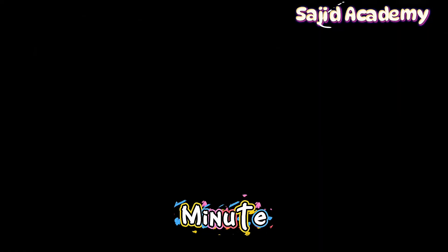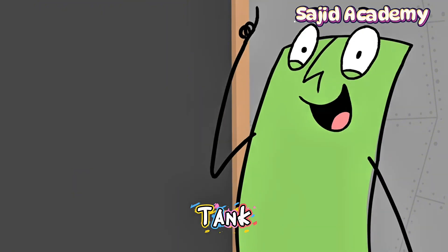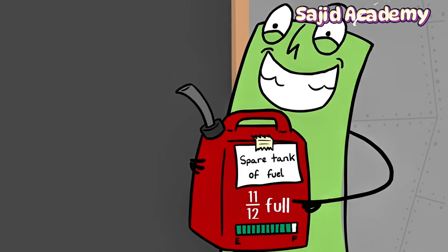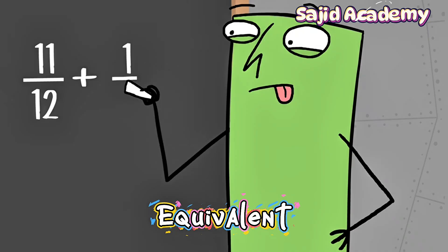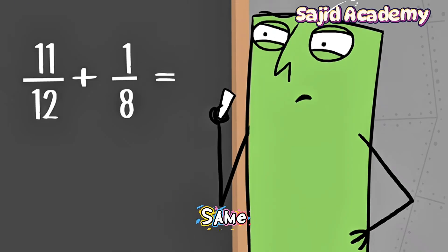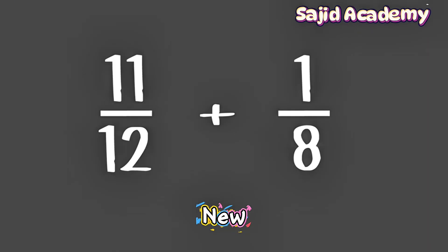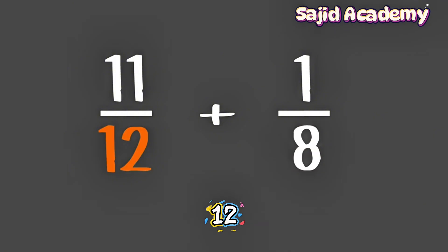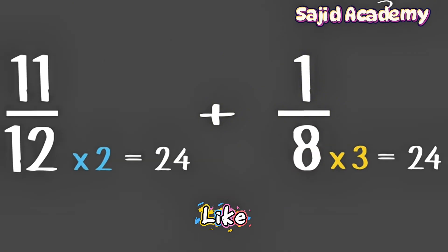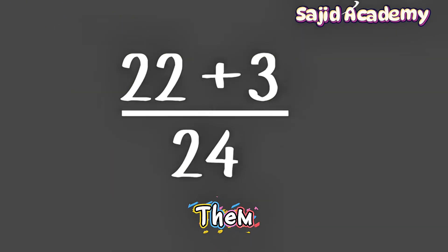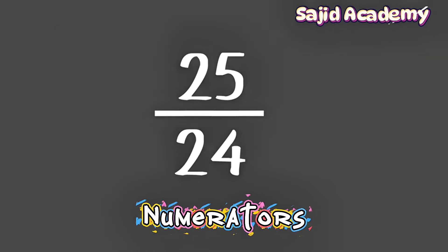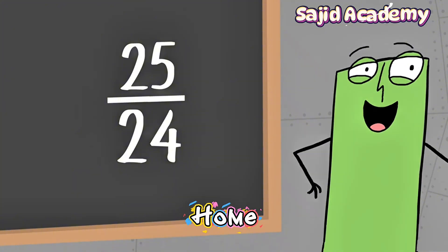Wait a minute. Isn't there a spare tank of fuel? For each fraction, we need to find an equivalent fraction where the denominators are the same. The denominator of the new fractions should be a multiple of both eight and twelve. Like... Yes, twenty-four! So now they have the same denominator, you can add them together by adding the numerators. You have enough to go home.